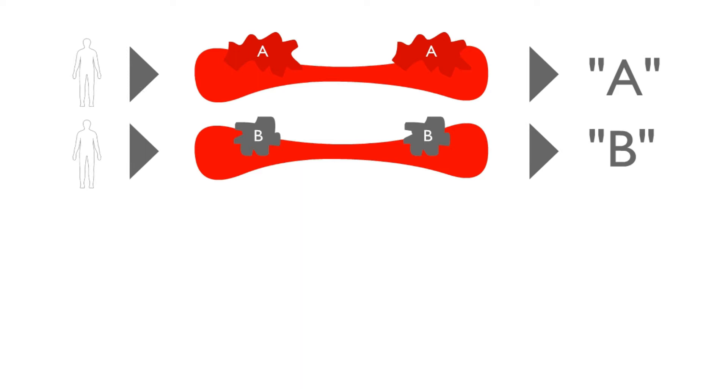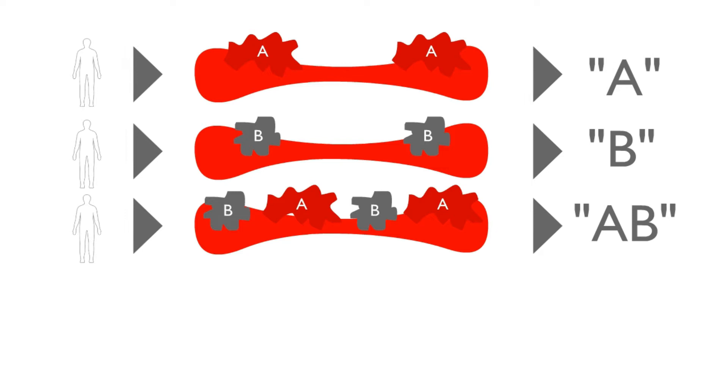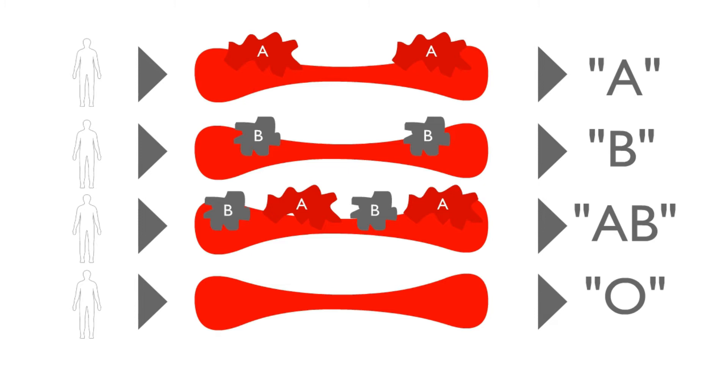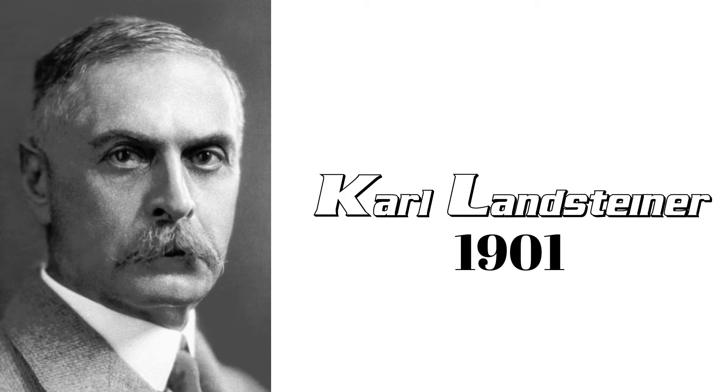If a person has agglutinogen A on the surface of the RBC, then we say his blood group is A. There are also people who have both of the antigens on the surface of their RBC, and we say their blood group is AB. If a person has none of the antigens on the surface of the RBC, then we call his blood group O. This is why this blood grouping system is called the ABO blood grouping system. This system was developed by an Austrian immunologist named Karl Landsteiner in 1901.